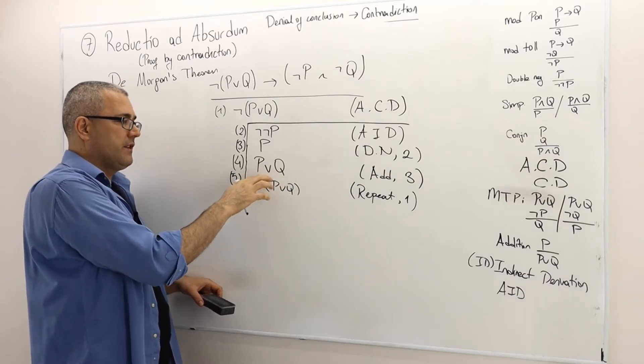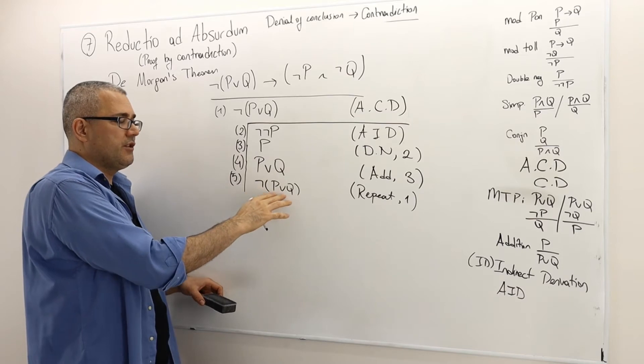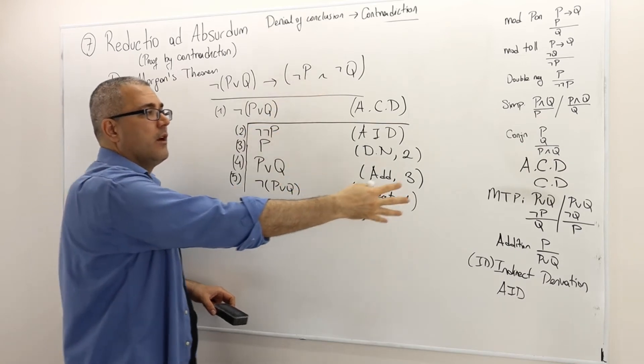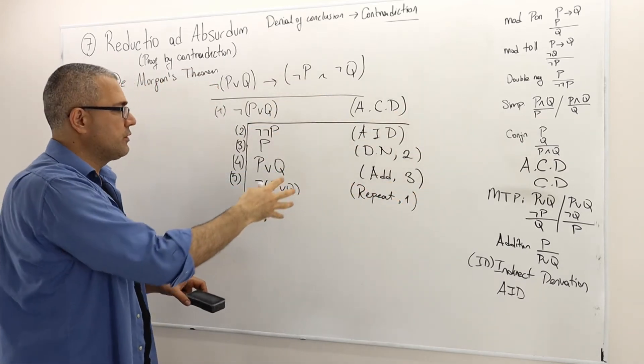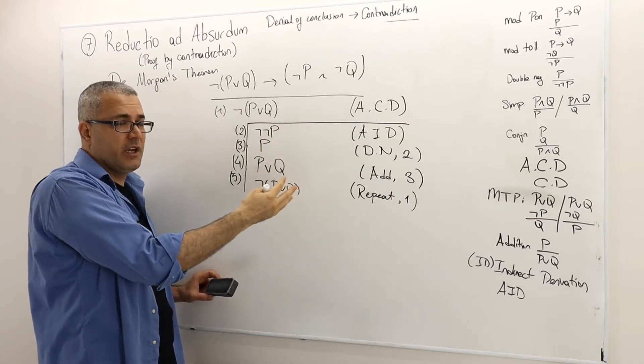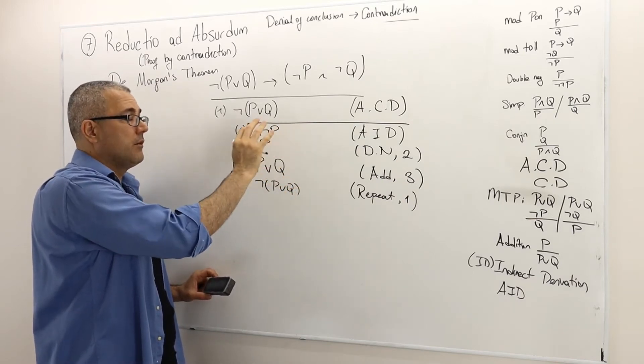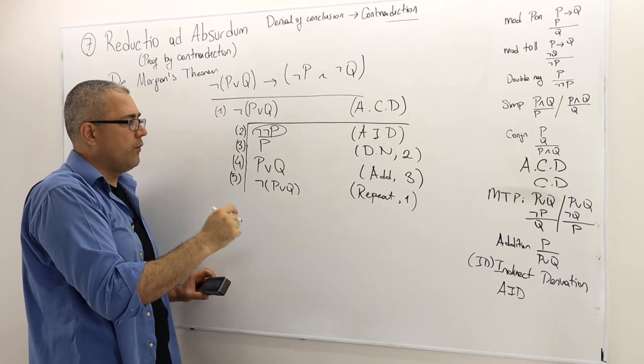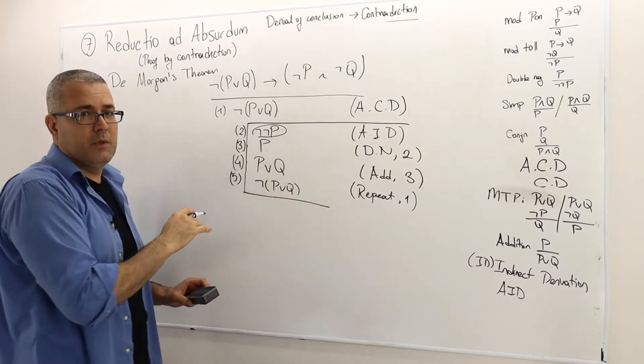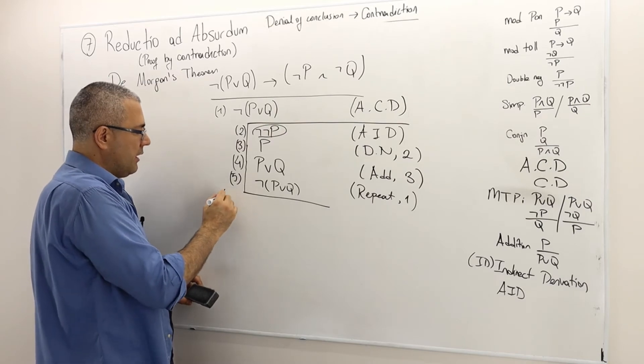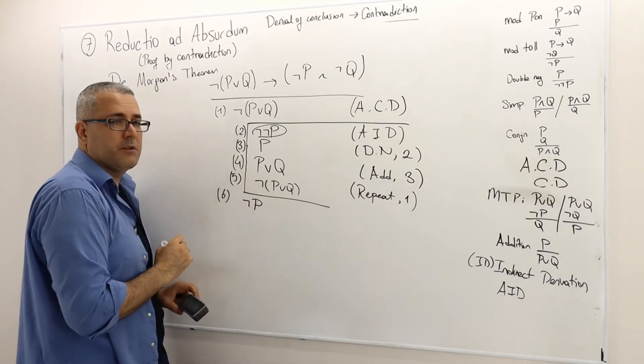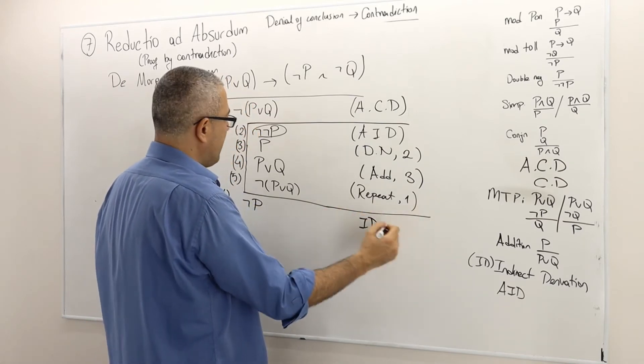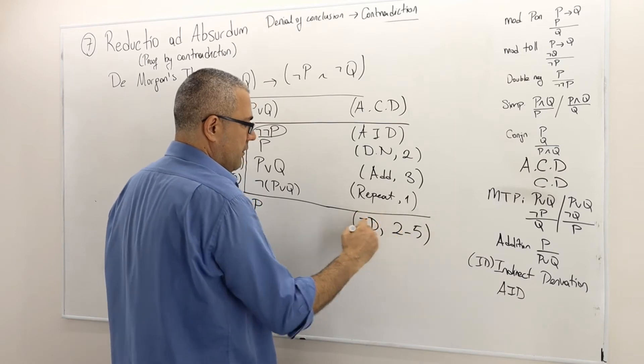So these two statements - the statement is true and its negation is also true. This is a contradiction. And this contradiction, I derived everything properly by using my inference rules. So nothing is wrong. But I reached a contradiction. That means my assumption must be wrong, must be false. So not not P is false, meaning I closed the box because I reached the contradiction. In line six, not P must be correct. So I'm going to call this indirect derivation thanks to my arguments between two to five. Very well. So this part is true.